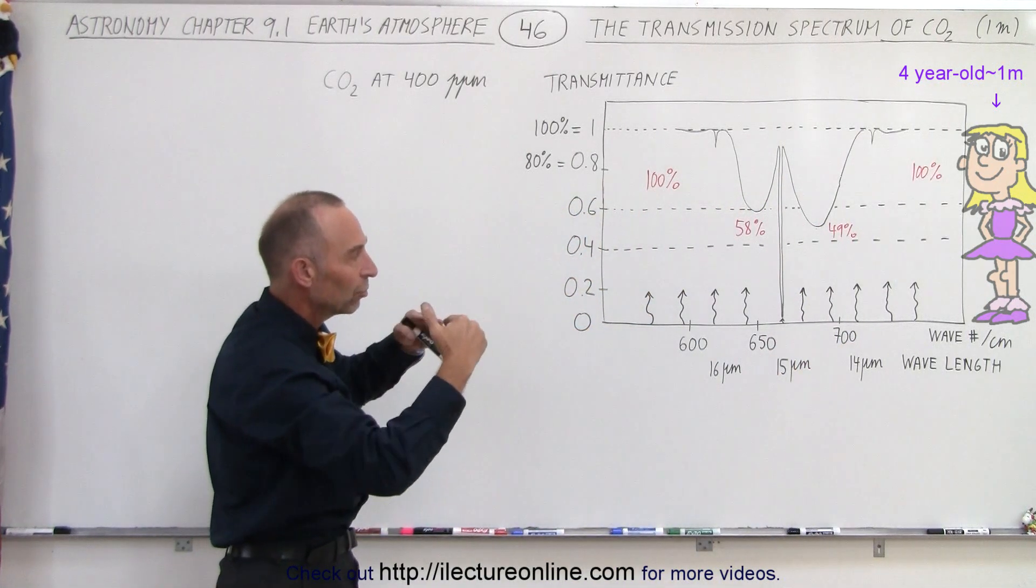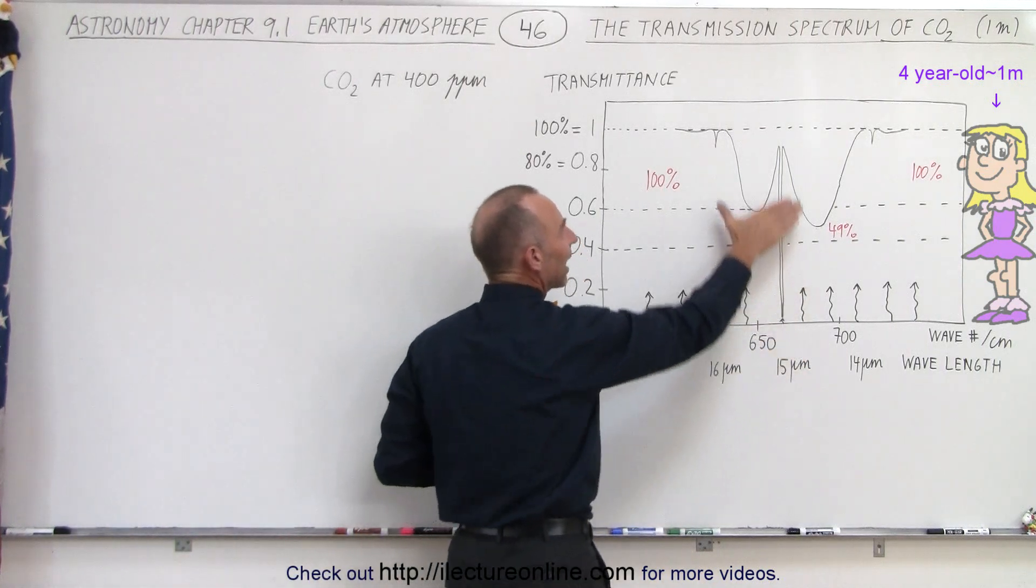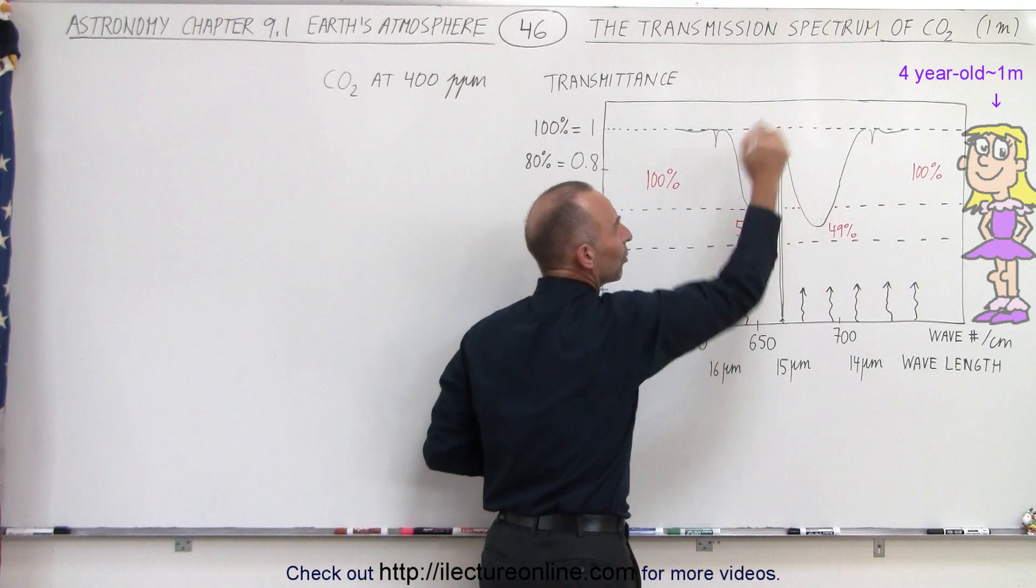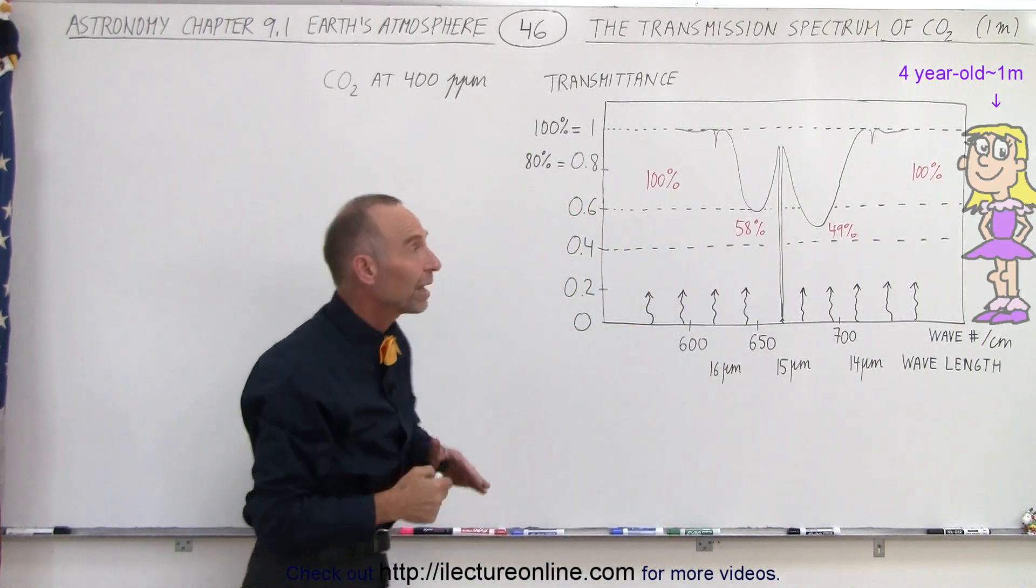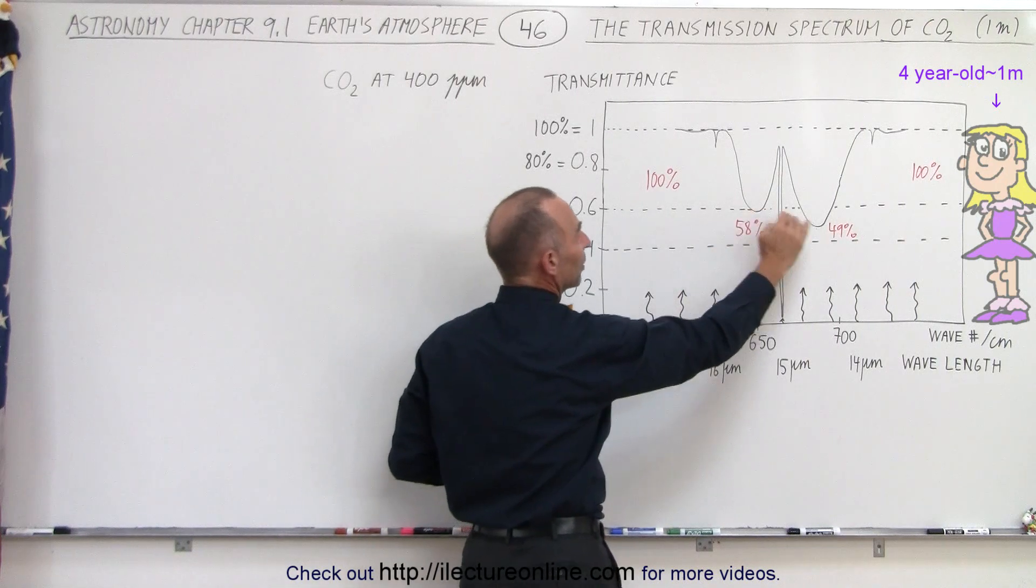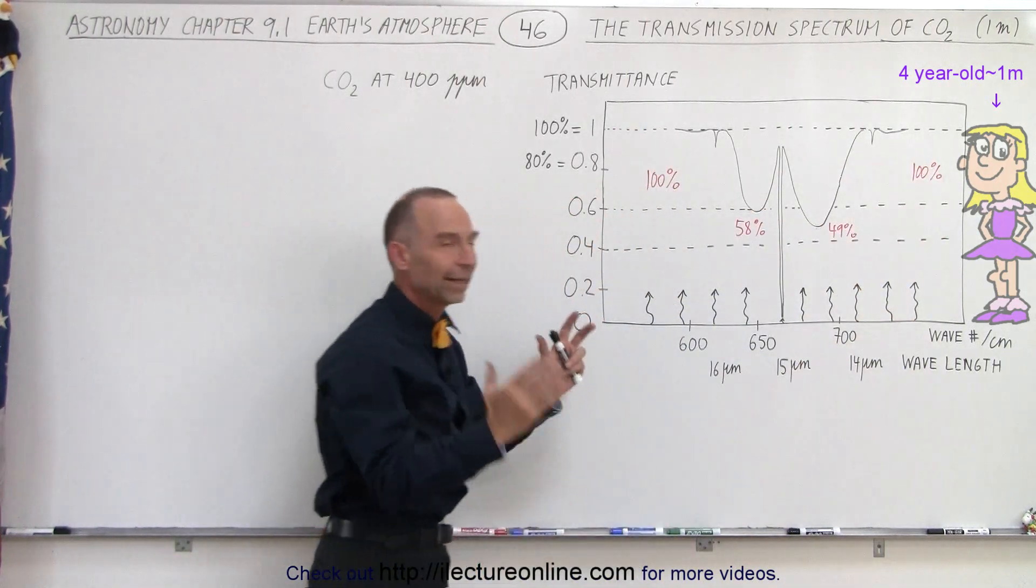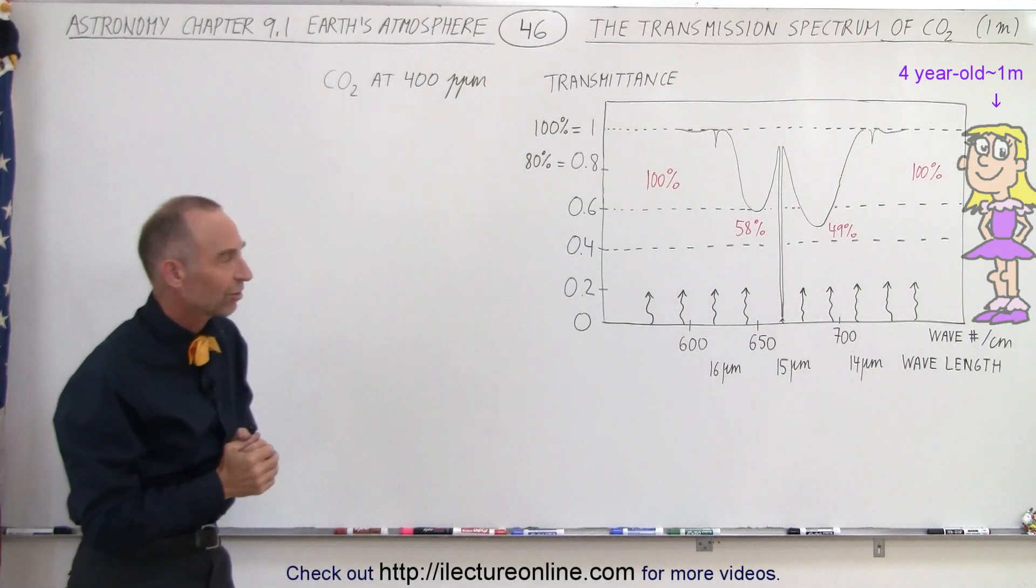So when we take a look at a transmittance curve or a transmission curve, it's the amount of radiation that makes it that high without being absorbed. So in this case, how much radiation makes it one meter without being absorbed? 58% over here, 49% there and virtually 100% to the either side of that range between 14 and 16 micrometers.